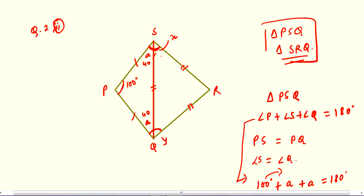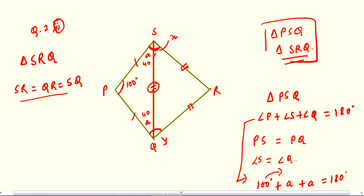Similarly, we have to find the next angles. In triangle SRQ, as you can see, all the sides are equal: SR equals QR equals SQ. By the hyphens shown in the diagram, these symbols indicate that all three sides of triangle SRQ are equal. So all the sides are equal, which means the given triangle is an equilateral triangle.